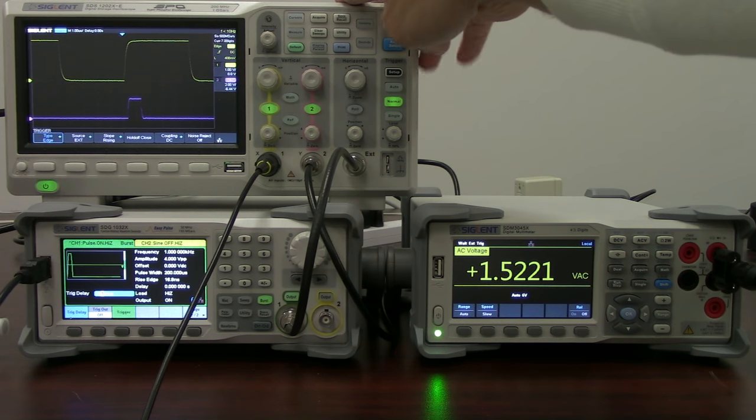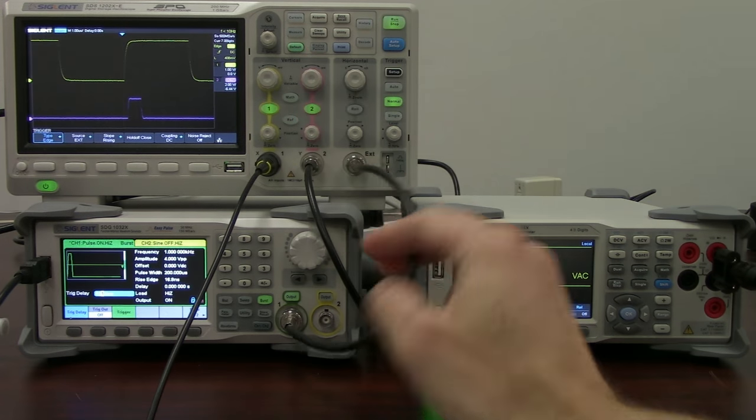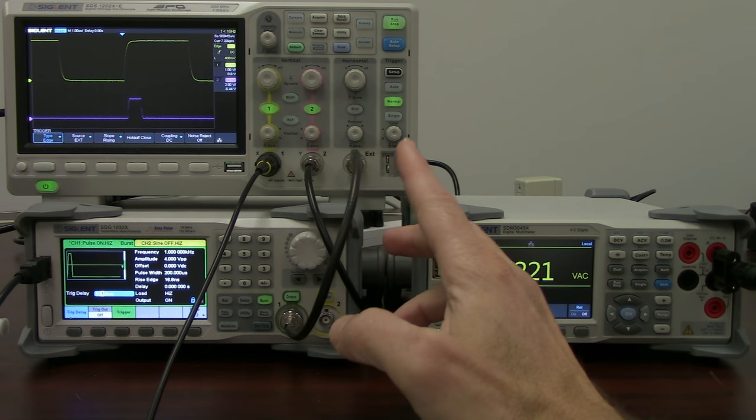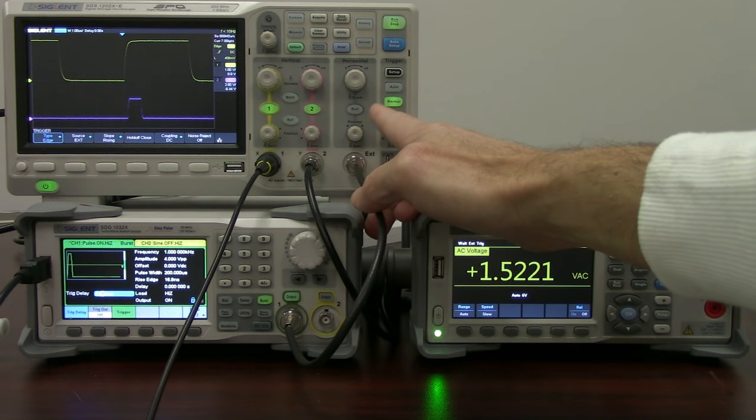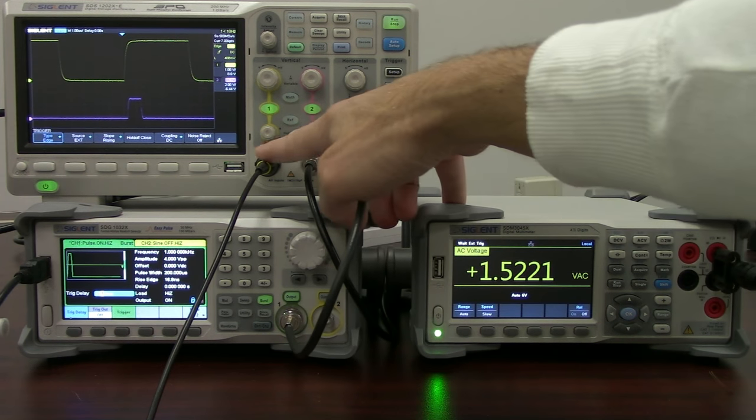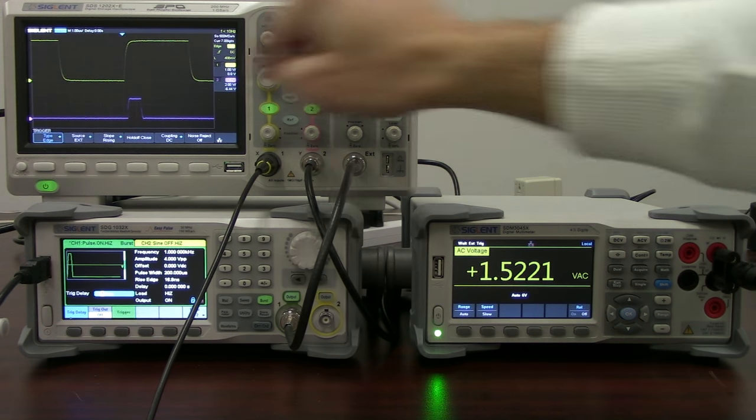In this particular example, I'm going to use the Siglent SDS-1202X-E oscilloscope. That is a two-channel oscilloscope with an external trigger input. That external trigger input is going to help us because it can be configured to work just like any of the other channels on the oscilloscope through the trigger menu.